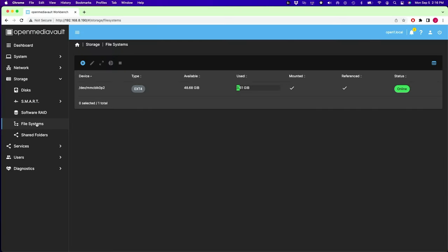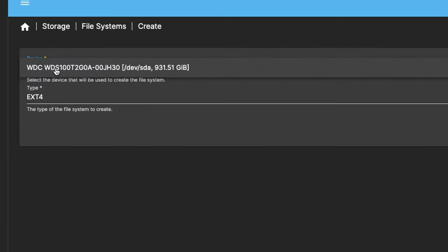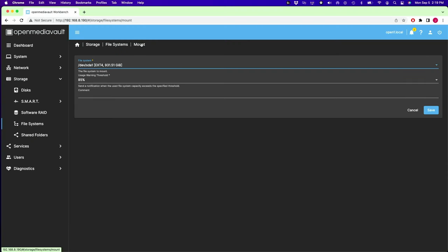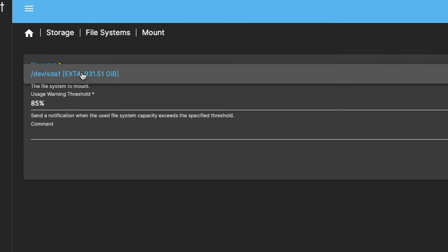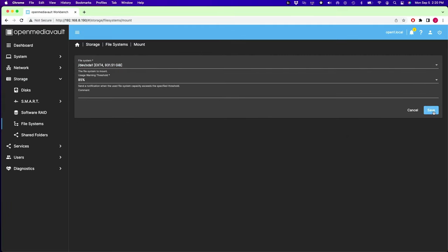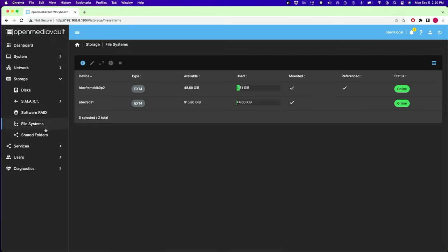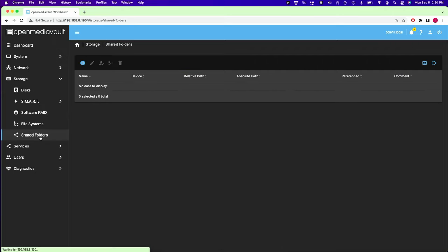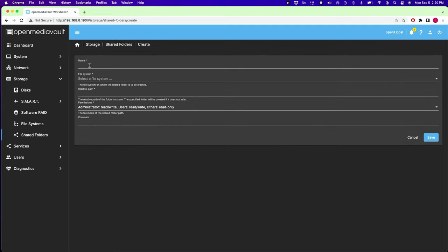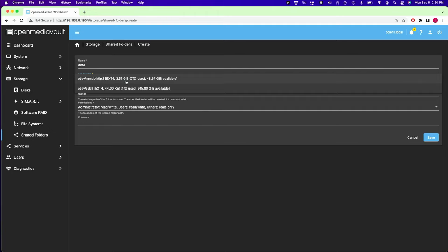Next we're going to create a file system. Click on file system. Click create. Pick a device. There's our terabyte hard drive. Click save. And then it's time for another cup of coffee. So it takes us right to the mount tab. Click on your file system and then save. Yes. After that save, we can create a shared file. So we'll click on shared file. Click the plus. Give it a name of data. Select our file system. You want the big one?